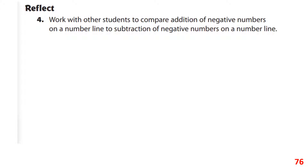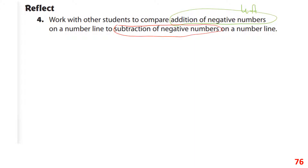Let's compare addition and subtraction of negative numbers on a number line. When you're adding a negative number you move to the left on the number line. When you're subtracting a negative number you have to move in the opposite direction — to the right.